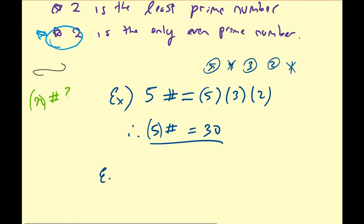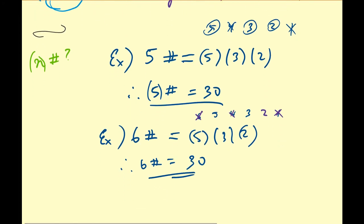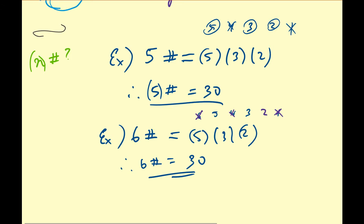Let's do another example: 6 primorial. The numbers less than or equal to 6 are 6, 5, 4, 3, 2, and 1. Marching through: 6 is not prime, 4 is not prime, 1 is not prime, but 5, 3, and 2 are prime. So 6 primorial equals 5 times 3 times 2, which is again 30. That's an interesting observation — 5 primorial and 6 primorial give the same answer.